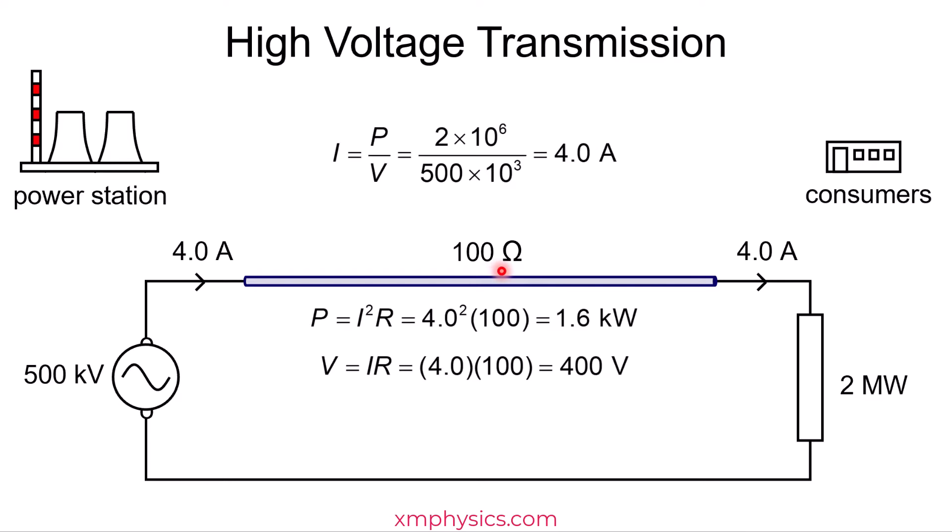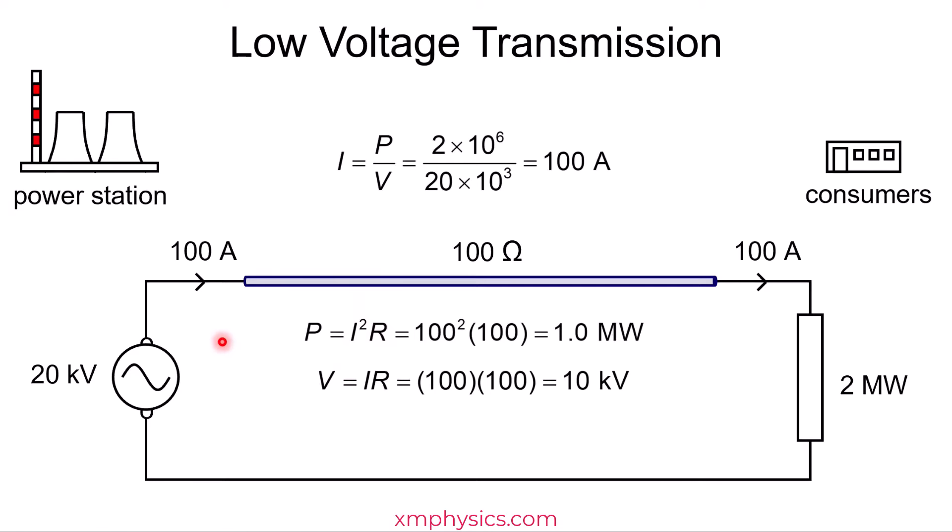Similarly, for the case when we are using 20 kilovolts, if you want to calculate the power loss in the cable using V²/R, you shouldn't be doing 20,000 squared divided by 100, you should be doing 10,000 squared divided by 100, which will give you the same answer if you were to use I²R, 1 megawatt.